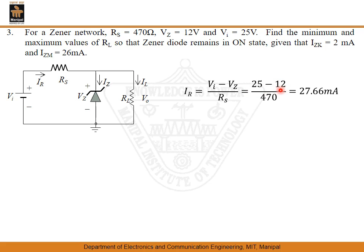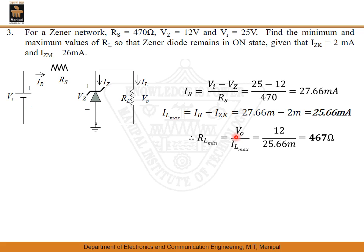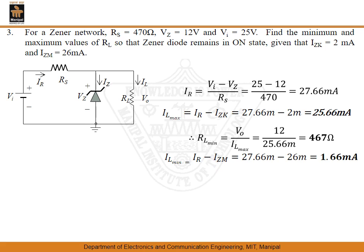With IR found, substituting IZK gives IL maximum of 25.66 milli amperes. The ratio of V0 to IL max gives RL minimum of 467 ohms — the minimum load resistance that still keeps the Zener diode in the ON state. Then IL minimum, which is IR minus IZM, is 1.66 milli amperes. The ratio of V0 to IL minimum gives the maximum value of load resistance up to which the Zener diode remains in the ON state.